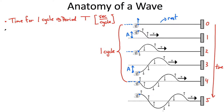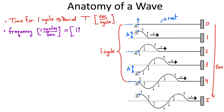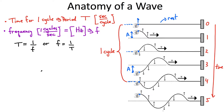Something closely related is what we call the frequency of the wave. Frequency is measured in cycles per second. One cycle per second is what we call a hertz. You'll hear that word a lot — for example, a frequency of 400 hertz means 400 cycles per second. We use lowercase f to describe frequency. There's a relationship between period and frequency: the period equals one divided by the frequency, or the frequency equals one divided by the period. Both expressions are the same, and you can see the units work out.